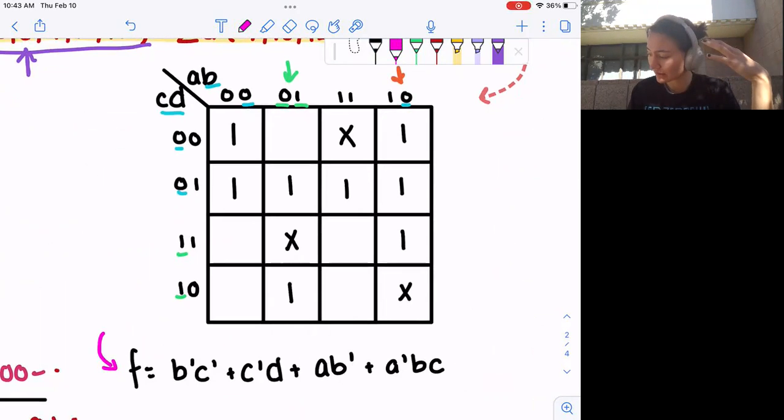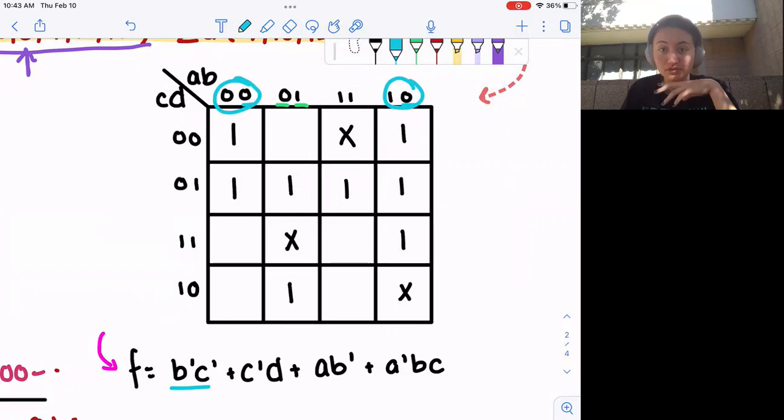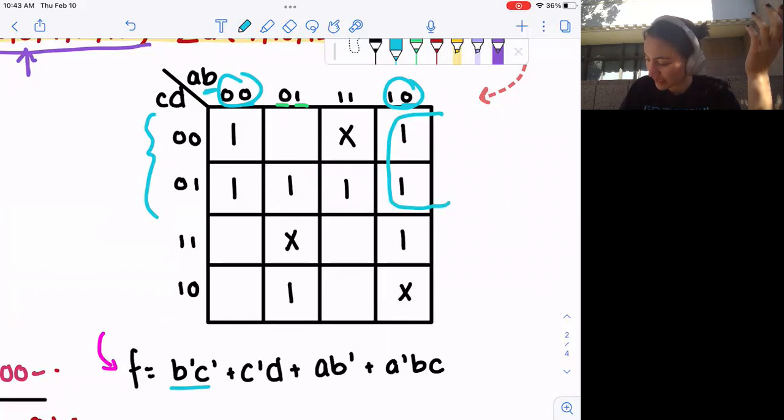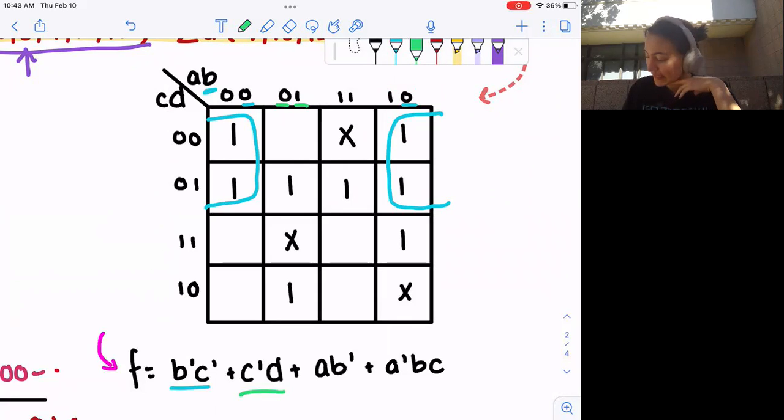We have our minimum sum of products expression that we found using the Quine-McCluskey method and prime implicant charts. What I'm going to show you is how to map all of these values to the K-map. So we start with this B not C not term. You can see that this column and this column are represented by B not because the second bit in both of those headers are both zero and B is the second bit. For C not, it's represented by these two rows. If we want to cover those two columns and those two rows, the grouping would be this for B not C not on a K-map.